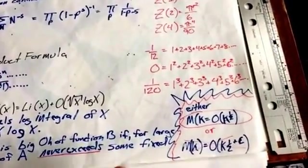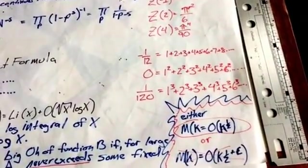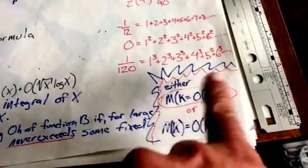And that Mk, Möbius K, equals to big O k one-half as opposed to the error term.